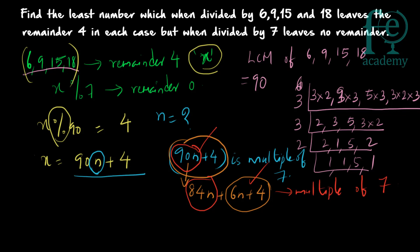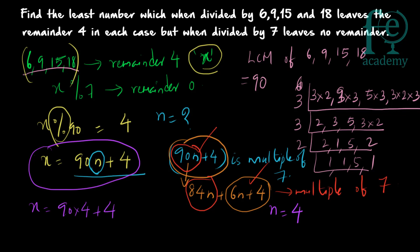We need the least value of n for which 6n + 4 is a multiple of 7. Using trial and error: n=1 gives 10 (not a multiple of 7); n=2 gives 16 (not a multiple of 7); n=3 gives 22 (not a multiple of 7); n=4 gives 24+4 = 28, which is a multiple of 7. So the smallest value is n = 4.